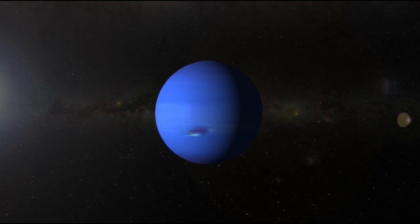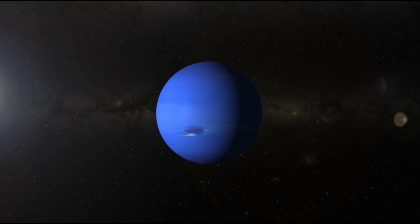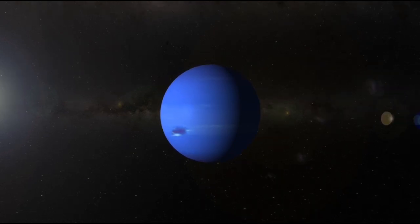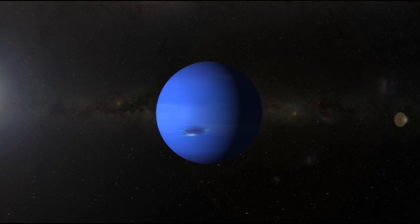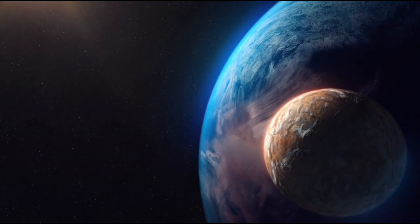These ultralight sails might accelerate spacecraft to unprecedented speeds, potentially allowing us to reach the Proxima Centauri system in just two decades. This radical progress brings the fantasy of reaching an Earth-like planet in our lifetime tantalizingly close.